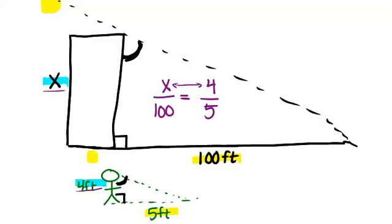And notice X and 100 are in the same fraction because they were from the same situation with the building and 4 and 5 are in the same fraction because they were both with the person.